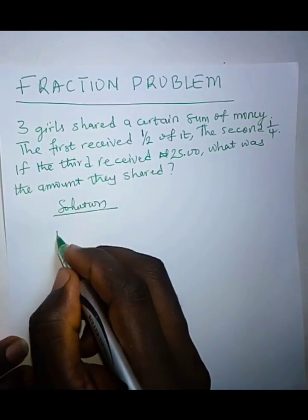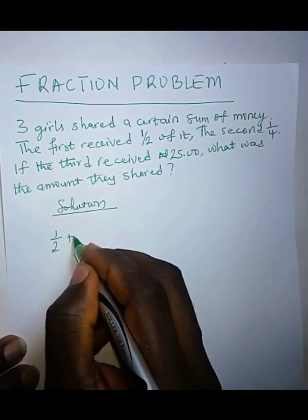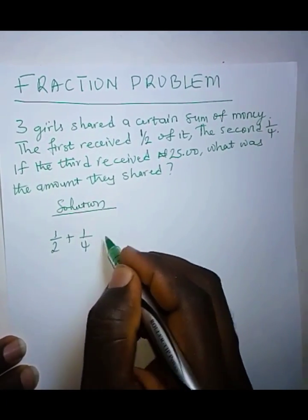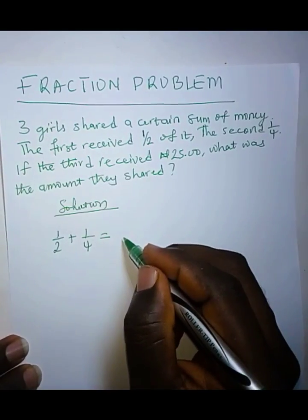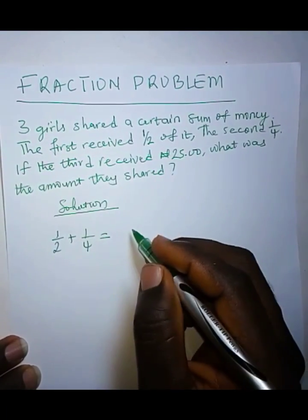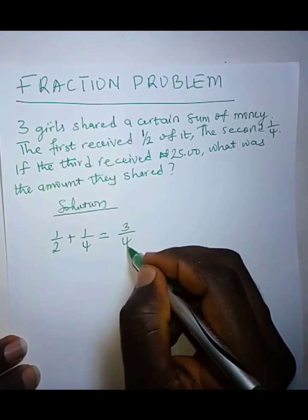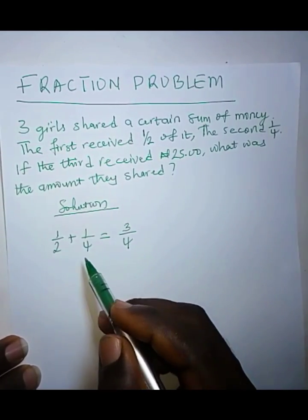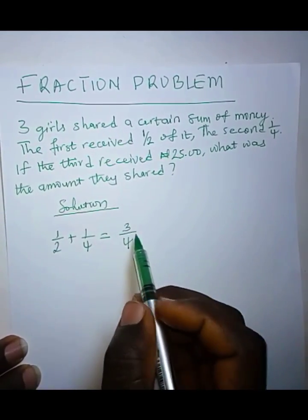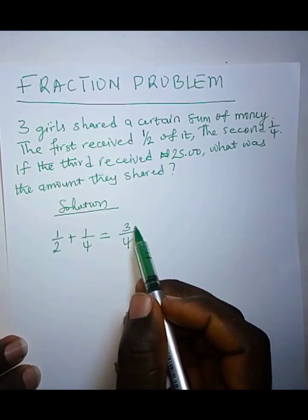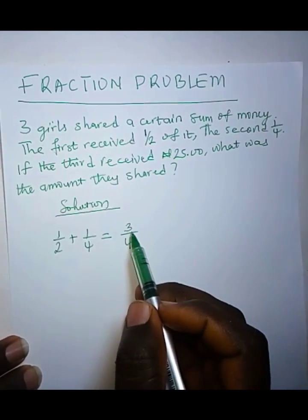So we add the two fractions received by the first two persons: 1 over 2 plus 1 over 4 should be 3 over 4. Okay, so we can assume that this is one part of the money and then we're looking for the remaining part which corresponds to 25 Naira.